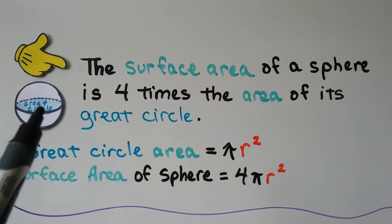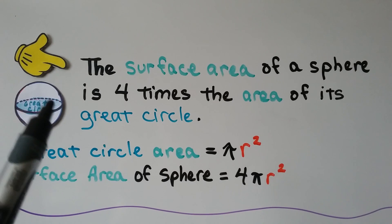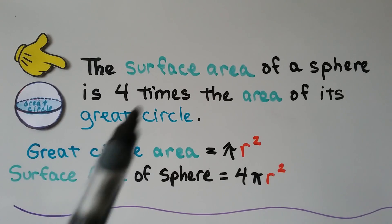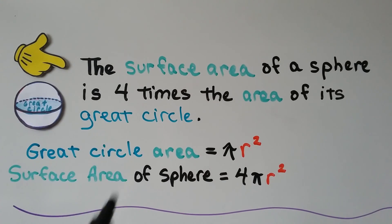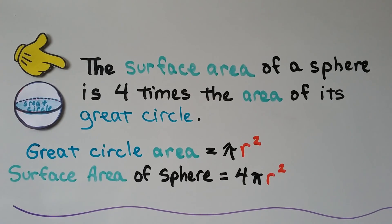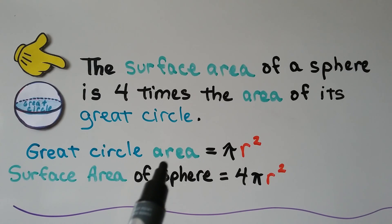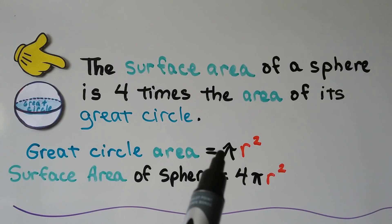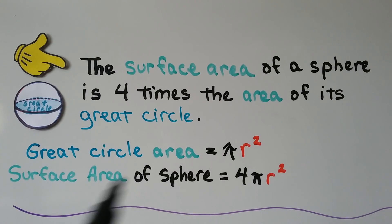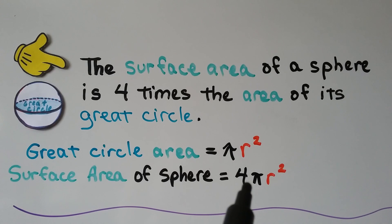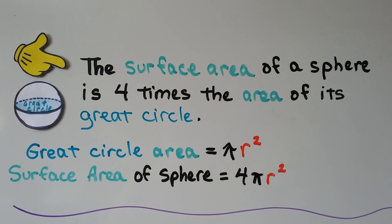If we know the area of the great circle, we can just multiply it by 4 to find the surface area of the sphere. The area of a circle is pi r squared; multiply that by 4 and we get the surface area of the sphere: 4 pi r squared.